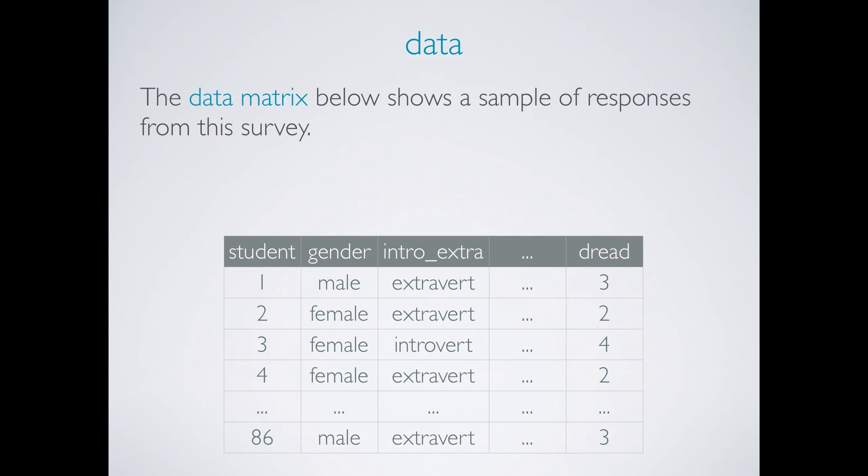The data are stored in a data matrix where each column represents a variable and each row represents an observation or a case. In this scenario, our cases are the students, there are 86 of them, and we have 6 variables.